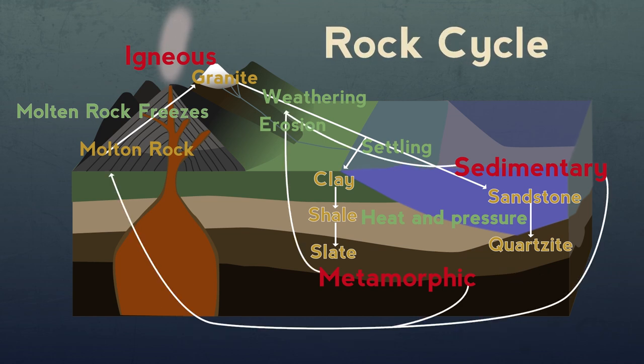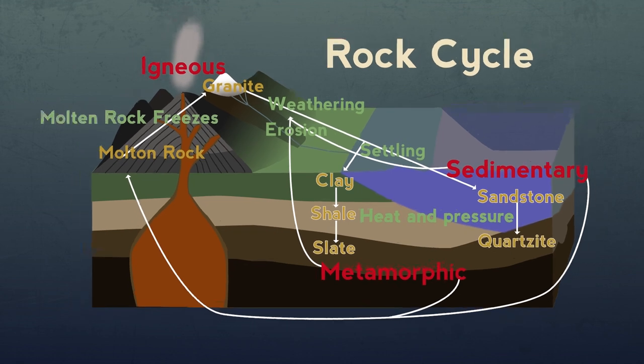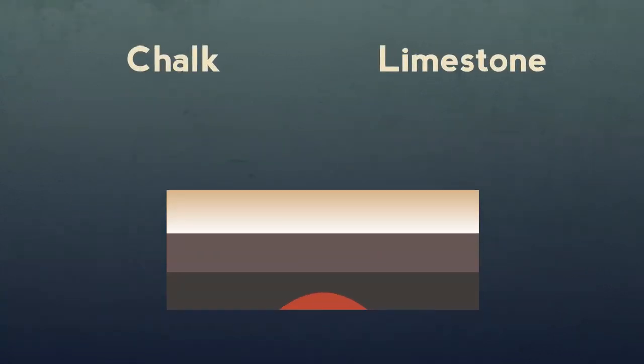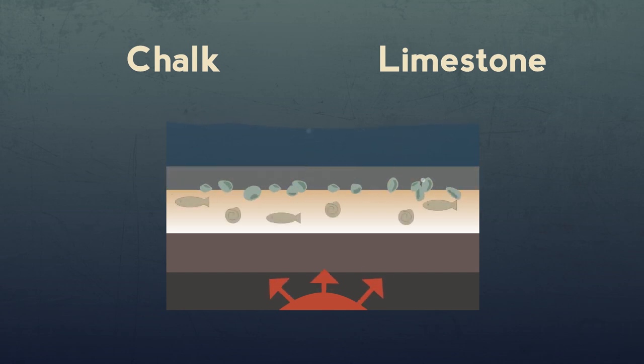We must also mention chalk and limestone made of calcium carbonate which are sedimentary rocks formed in the sea from the shells of dead sea creatures. Under heat and pressure they form the metamorphic rock marble.